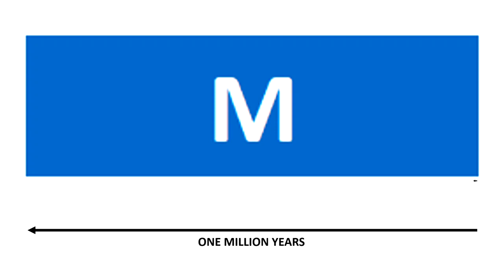This is a much easier number for us to use to understand the huge scales over which living things have evolved and changed. We want to keep in mind the part of this that represents human civilization too — even though we might lose track of how tiny that arrow is, it's always there on the right side.